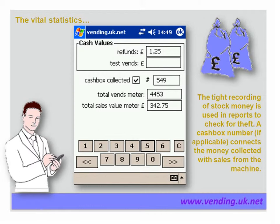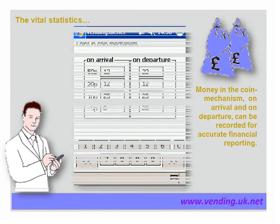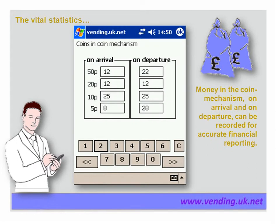If a cash box is collected, the value of it will be linked to this visit after the cash has been counted. Any money entered into the coin mechanism is also recorded. This mechanism shows four types of coin. If the coins on arrival and on exit are recorded, then exact checks are made on the security of the machine. Once the visit has been made, all information collected is sent from the operator's mobile to the Vending UK server.